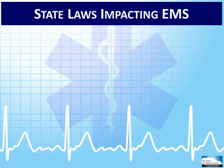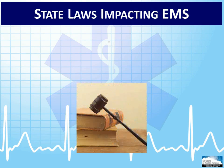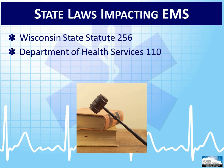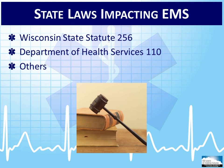Each state has its own laws that impact EMS within the state, and Wisconsin is no exception. The first is Wisconsin State Statute, Chapter 256, which establishes and defines EMS in the state. Because the state legislature knows very little about EMS and its functioning, it has delegated authority to DHS for the promulgation of rules pertaining to the functioning of EMS within the state. DHS-110 is the administrative rule in Wisconsin that defines how the EMS system functions within the state. In addition to these major legal provisions, there are also laws pertinent to patient confidentiality, patient autonomy, mandatory abuse reporting, protective custody, and other facets of emergency care. Chapter 256, DHS-110, and these other provisions will be discussed in greater depth by another module in this course.